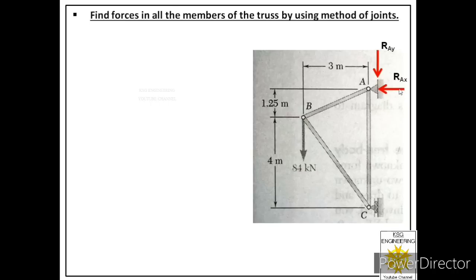Now let us label these reactions. This reaction is normal to the surface but acting in the X direction at joint A, so we label it RAX — reaction at A in X direction. Similarly, the other reaction is labeled RAY — reaction at joint A in Y direction.